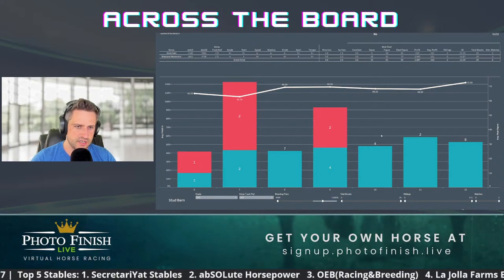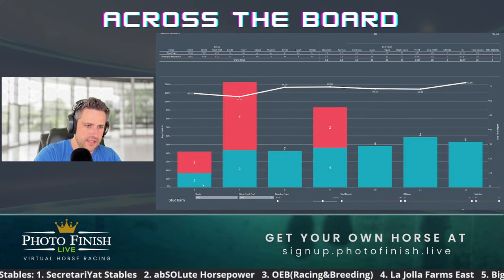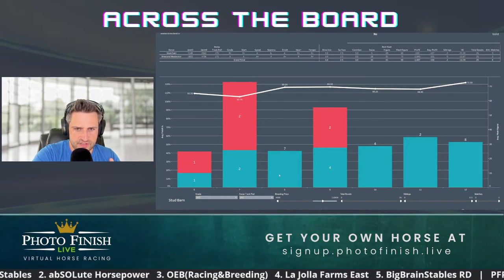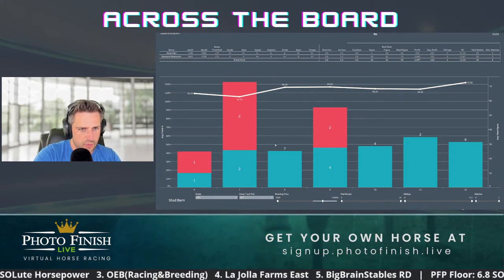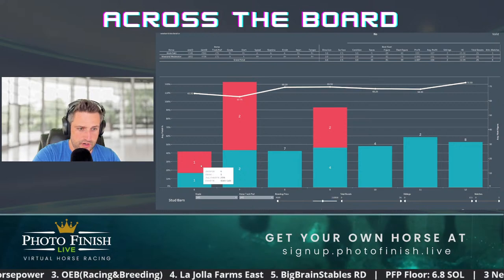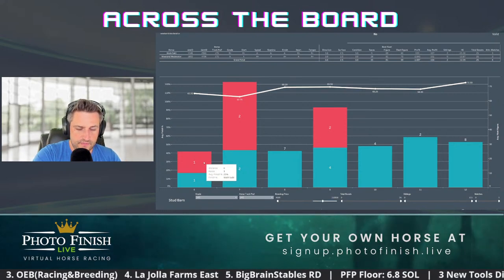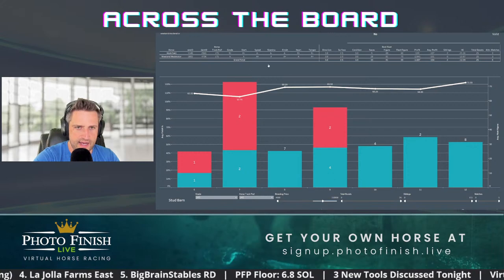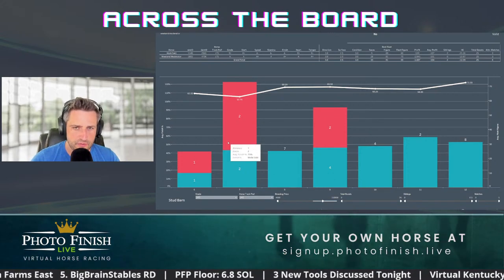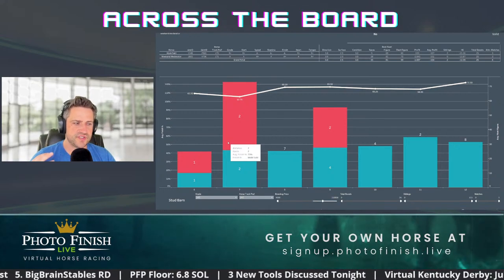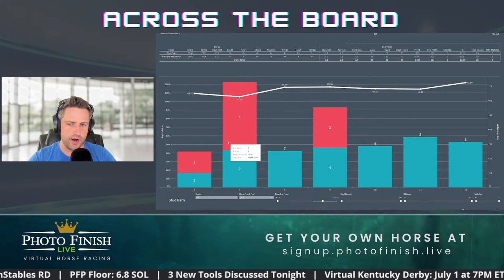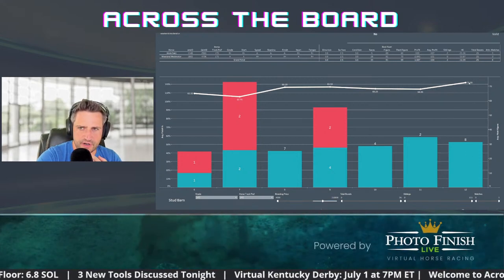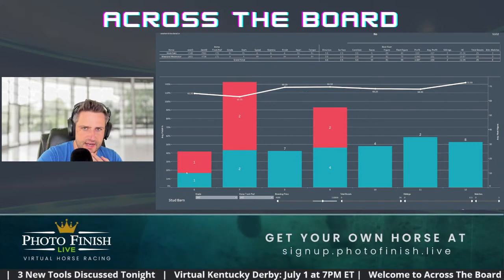Something that I think will come into play more in future generations is distance preference. If you look at Weekend Moderator's finish percent by distance, it kind of starts to climb as we go up in distance. Wabi was more of a shorter distance runner — I liked her at six furlongs, around 25% finish. So I wonder if there is a sweet spot in the six-through-nine furlong range. In my mind this gives me an idea right away of where I should be running this horse — I'm going to be focusing on those distances as my starting point.